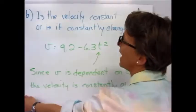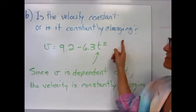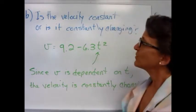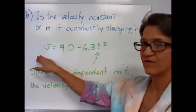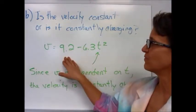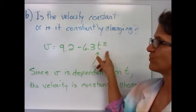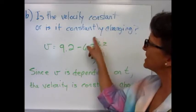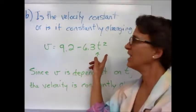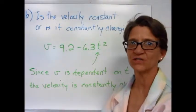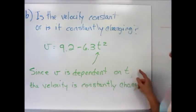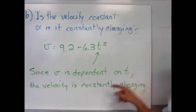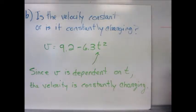Part B asks, is the velocity constant, or is it constantly changing? What you need to do is go back to your derivative of velocity. Velocity equals 9.2 minus 6.3t². If t is still in that equation, it's going to change every time t changes. So since v is dependent on t, your velocity is constantly changing.